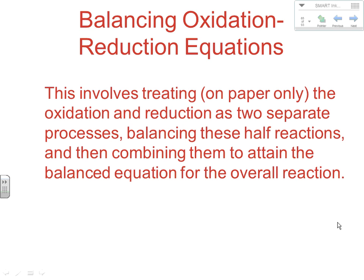This method involves treating, on paper only, the oxidation and reduction reactions as two separate processes. You balance these independent of each other, and then at the end you combine them back together to attain the overall balanced equation for the overall reaction.